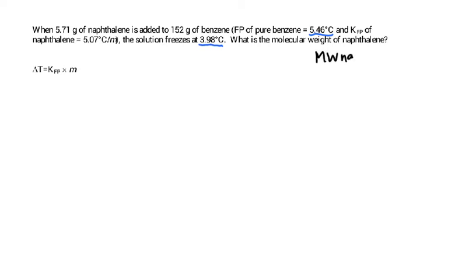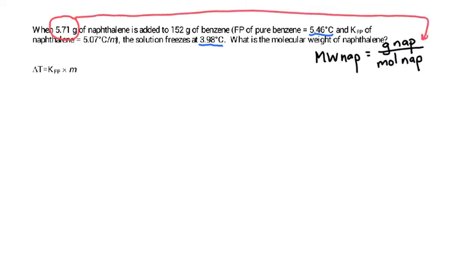And remember that the definition of molecular weight is going to be grams of naphthalene divided by moles of naphthalene. We already have grams. We know that there was 5.71 grams of naphthalene added. That's how many grams we have. That's going to go in the top part of our fraction. We need to solve for moles of naphthalene.